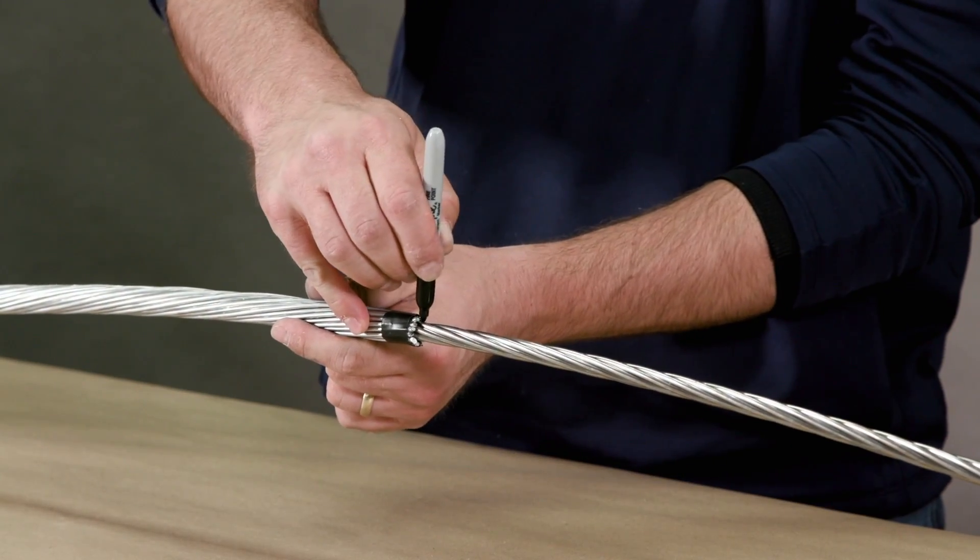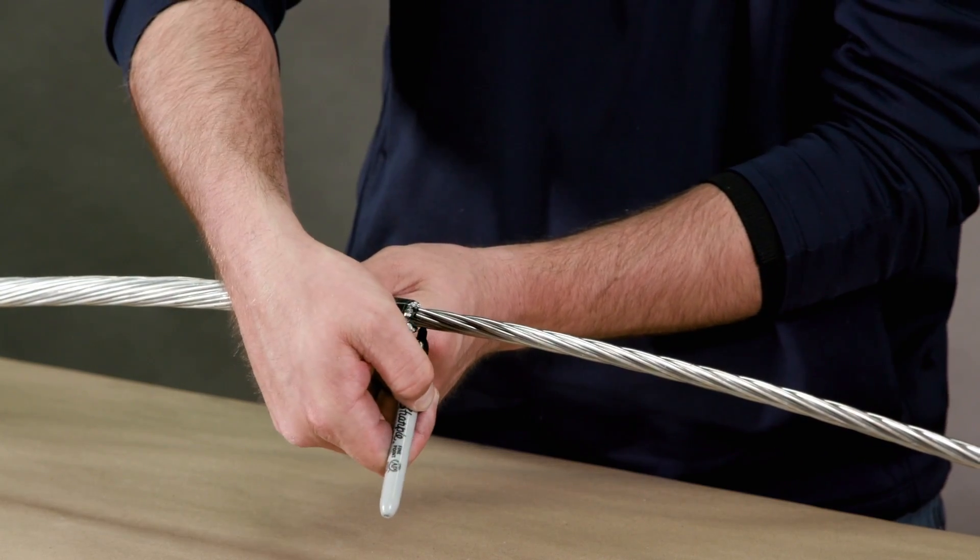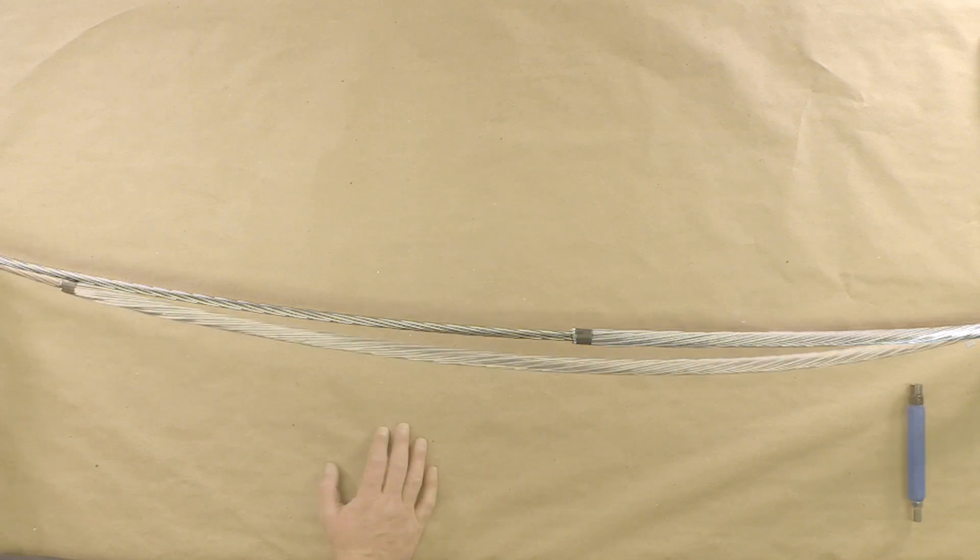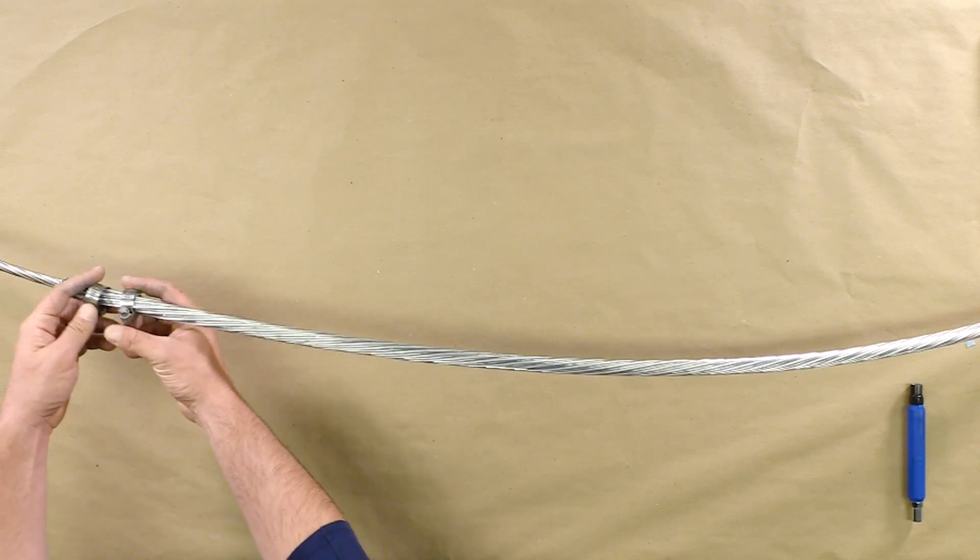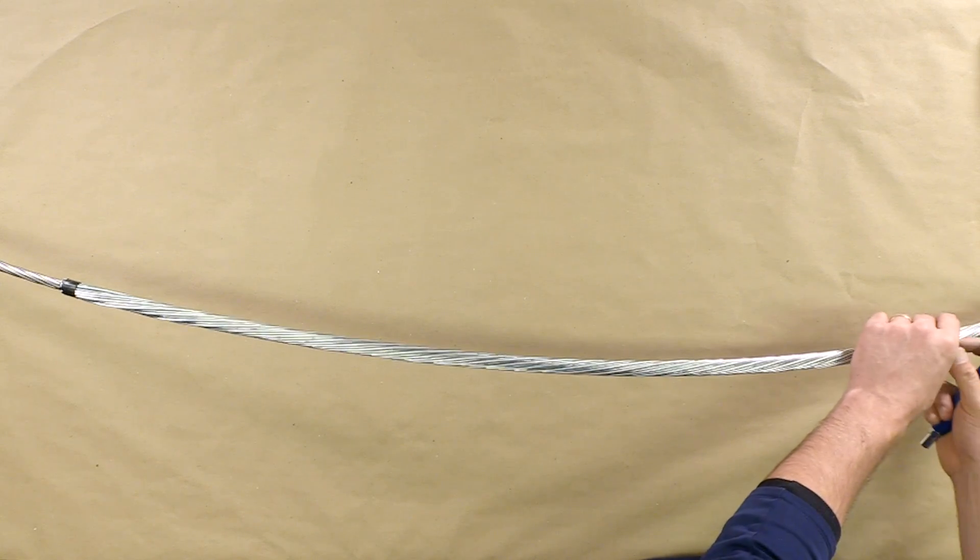Mark the next layer of strands at the first scored mark of the cable. Slide two hose clamps to approximately 20 inches from the marked location and lightly tighten.